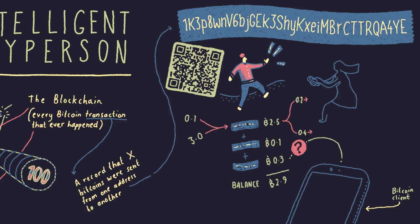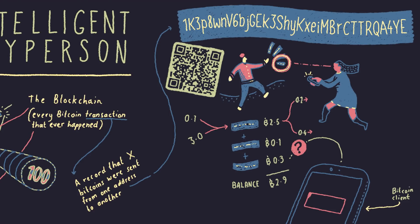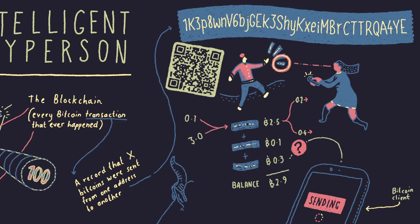To make a bitcoin payment to someone, you need to know an address of theirs. When you send bitcoins to an address, behind the scenes, your client creates a transaction and broadcasts it to the rest of the network. So what stops a person from maliciously creating and broadcasting a transaction that sends bitcoins from someone else's address to one of his own?